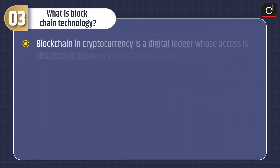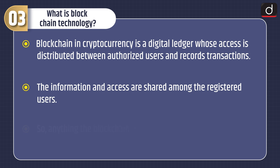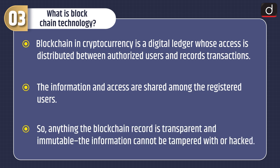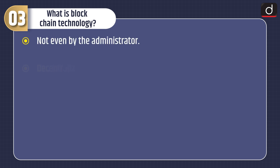Now let's discuss what is blockchain technology. Blockchain in cryptocurrency is a digital ledger whose access is distributed between authorized users and records transactions. The information and access are shared among the registered users. Anything the blockchain records is transparent and immutable — the information cannot be tampered with or hacked, not even by the administrator.